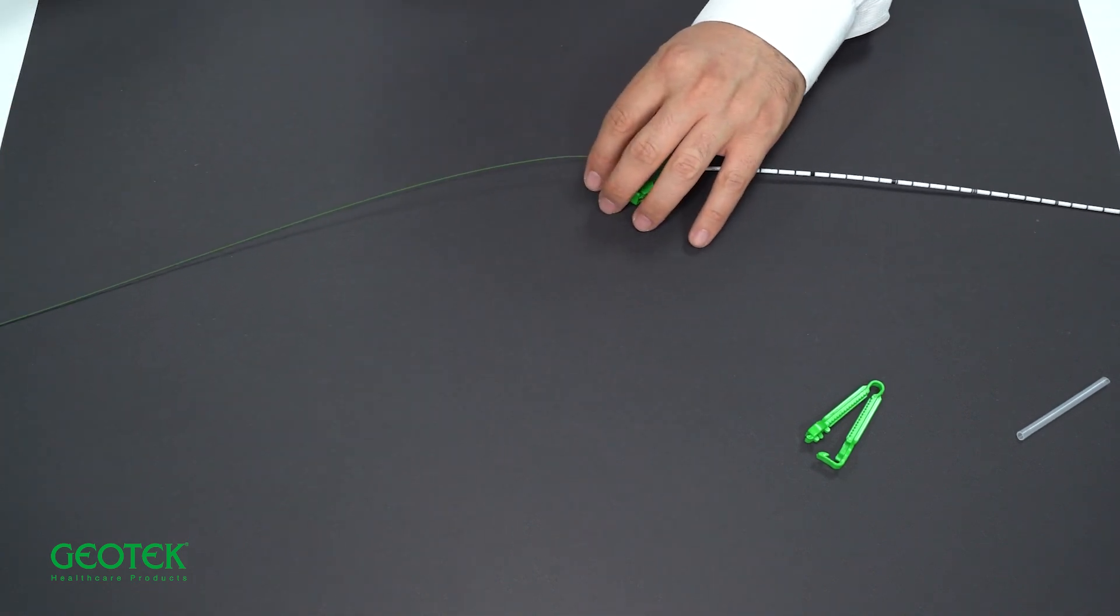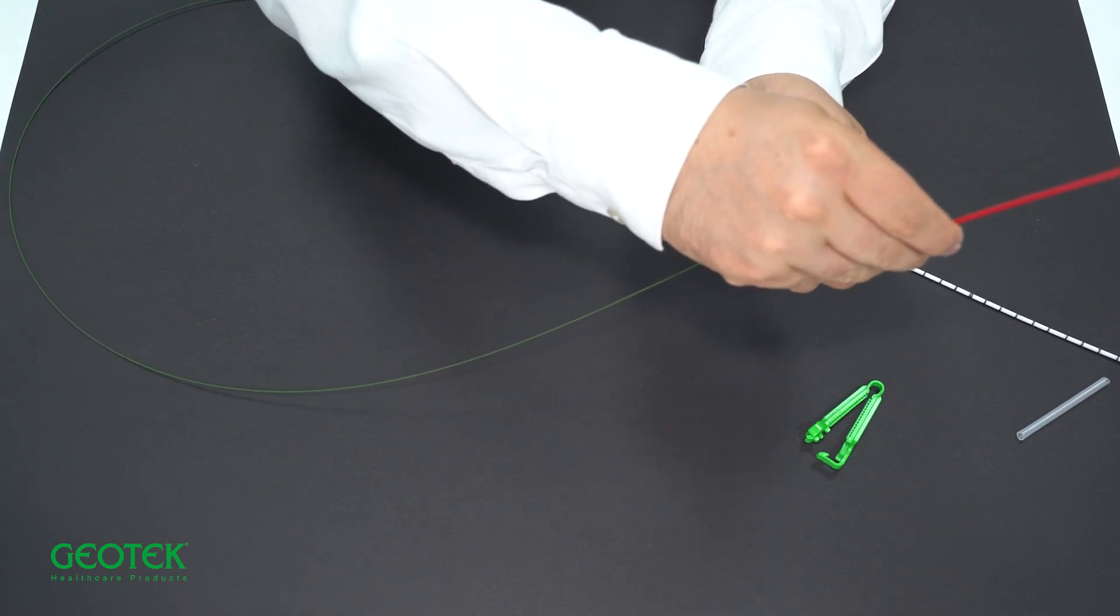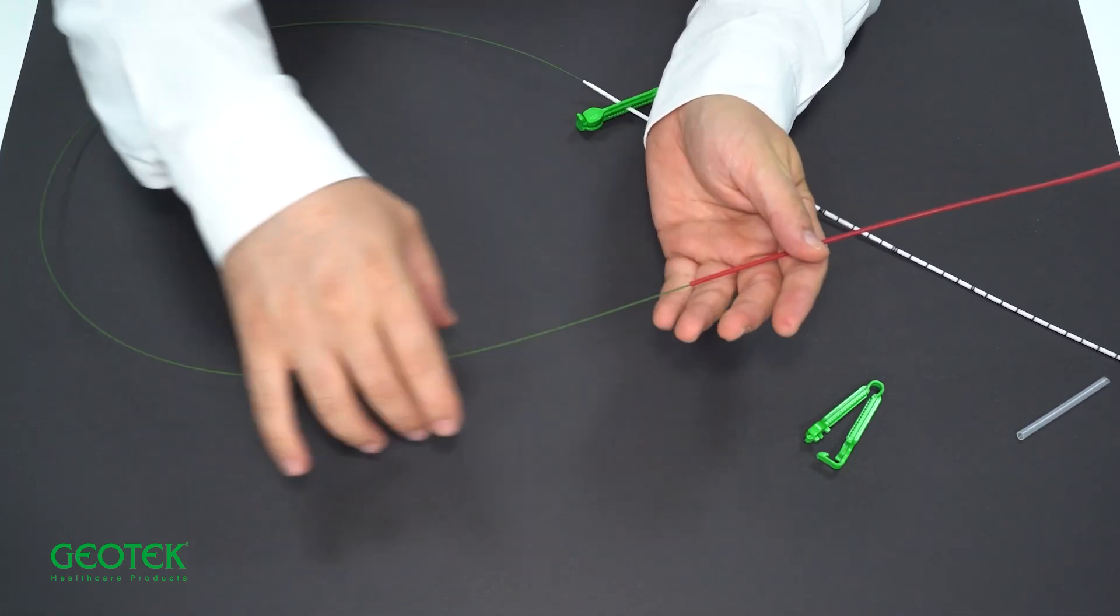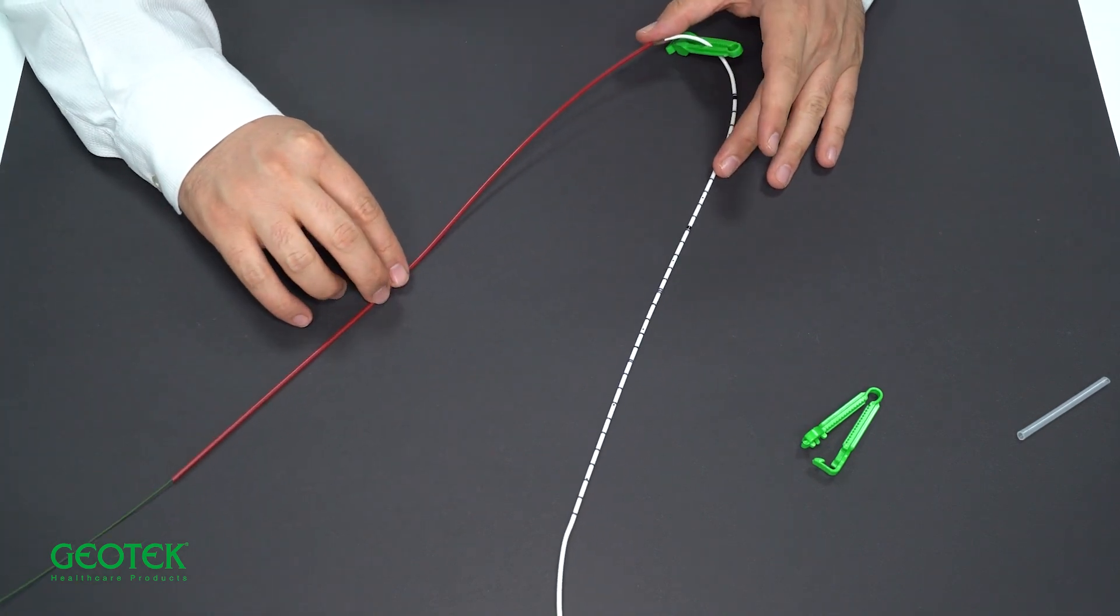In order to advance it through the cystoscope or ureteroscope, we place our pusher on the other side of our stent, that is, on the free side. In this way, it can be advanced through our cystoscope.